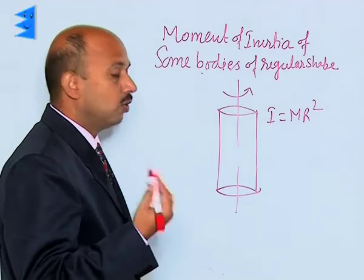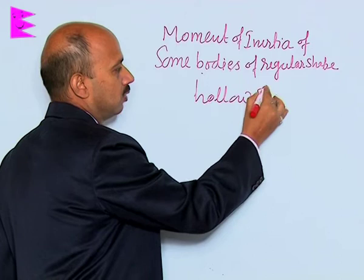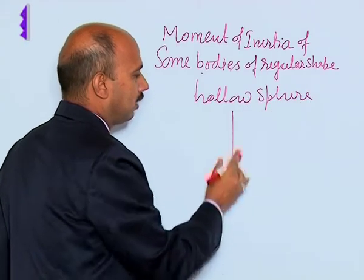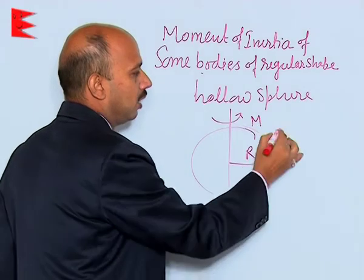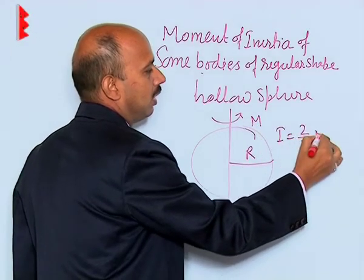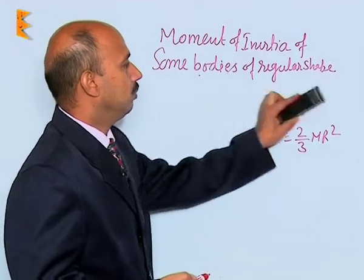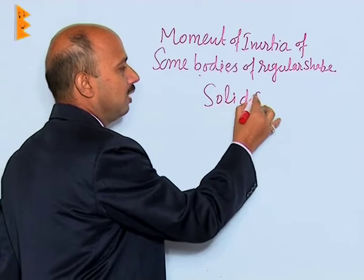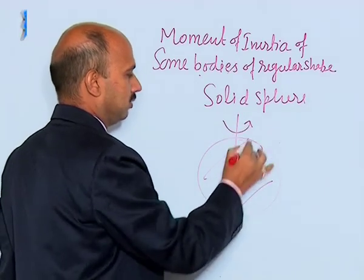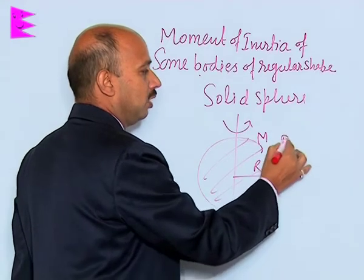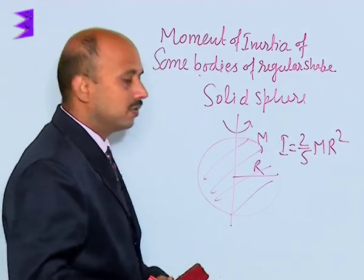Similarly, we can take a hollow sphere and a solid sphere. For the hollow sphere, the moment of inertia about this axis, where the radius is r and mass is m, is equal to 2 by 3 m r squared. For the solid sphere, the moment of inertia — where the radius is r and mass is m — is equal to 2 by 5 m r squared. So this is the moment of inertia of the solid sphere.